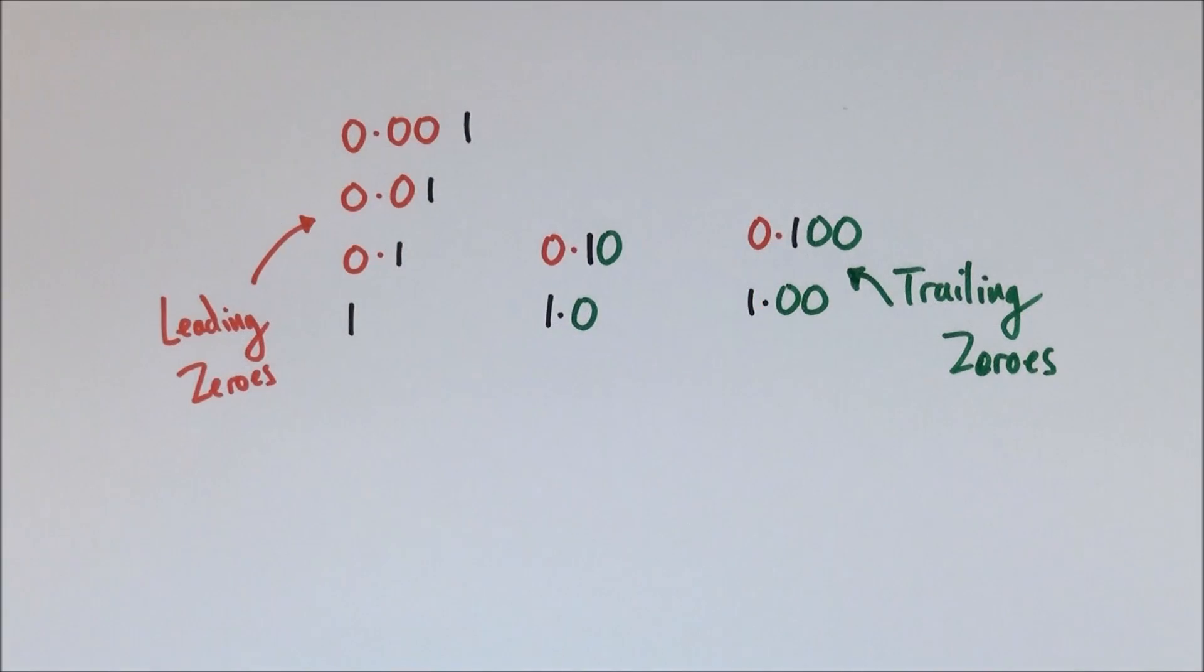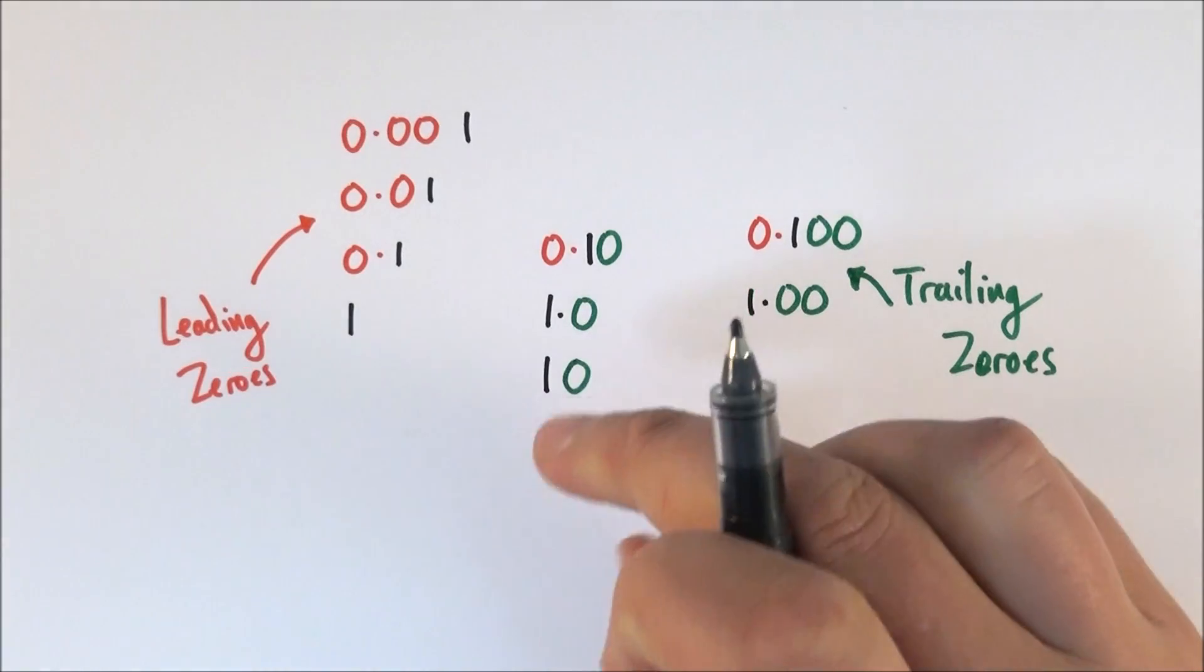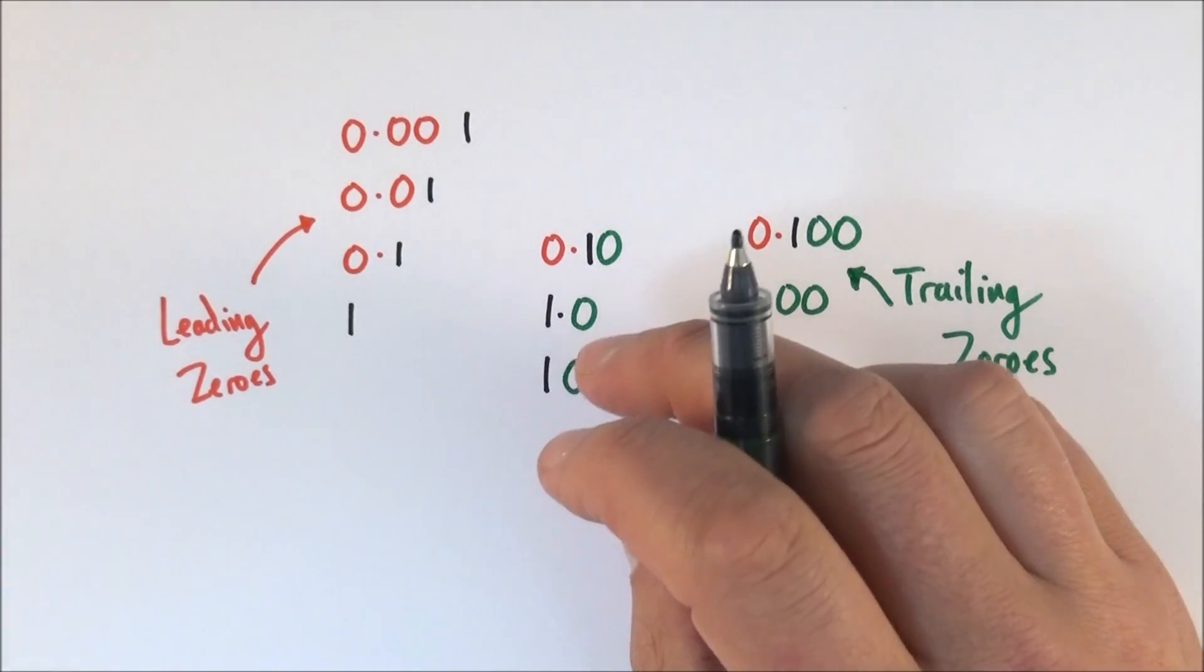However what happens if we have the number 10? Well if we have the number 10 what we still have then is a trailing zero so there's still a number after this. So the number 10 is written to two significant figures.